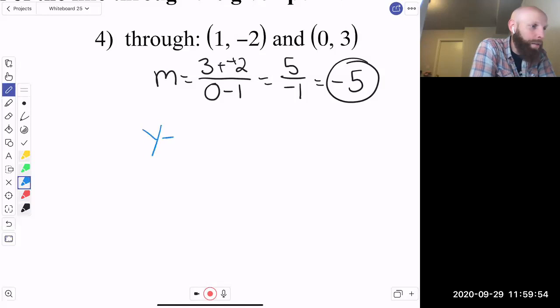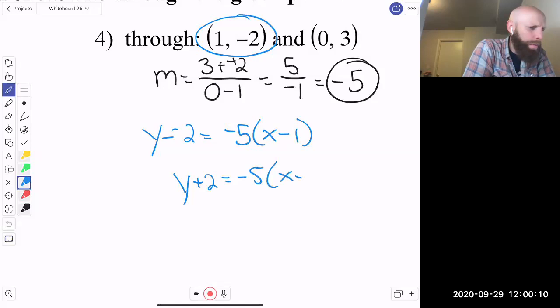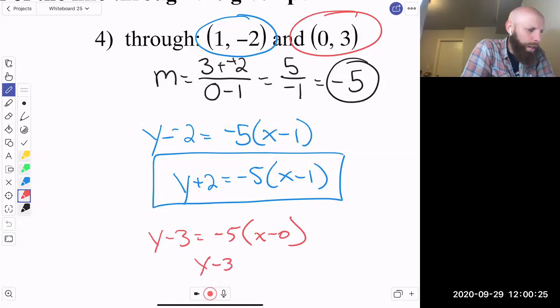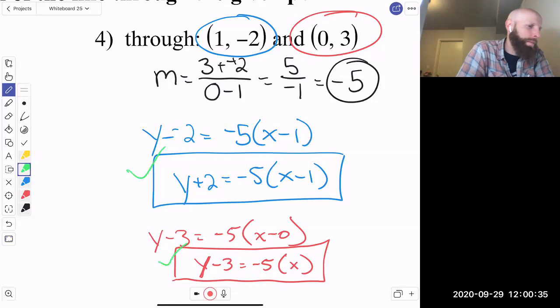All right, let's get to it. Y minus, I'm going to use the first point for the first one. Y minus negative 2 equals negative 5 x minus x1. I'm just going to give a little conversion, clean this up. Y plus 2 equals negative 5 x minus 1. And there is one possible answer. Maybe you choose to use this point. Well, let's see what it looks like with that point. Y minus 3 equals negative 5 x minus 0. Clean it up. Y minus 3 equals negative 5 times x. There you go. Either of those two work, that or that. When they give you multiple points, you get multiple options. Pretty cool to do that.